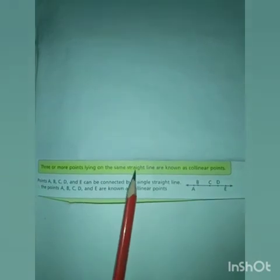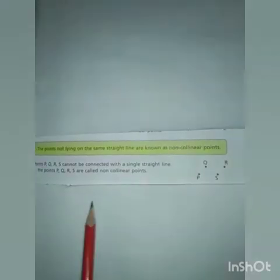Next: Collinear Points. Abhi humne straight line ki definition mein paṛha ke points ko hum join karte hain to hamare paas straight line ban jaati hai. To collinear points yeh hain: three or more points laying on the same straight line are known as collinear points. Jaise yeh hamare paas ek straight line hai jis ke upar points aap ko nazar aa rahe hain — point A, B, C, D, E — in points ko humne join karna hai straight line par.